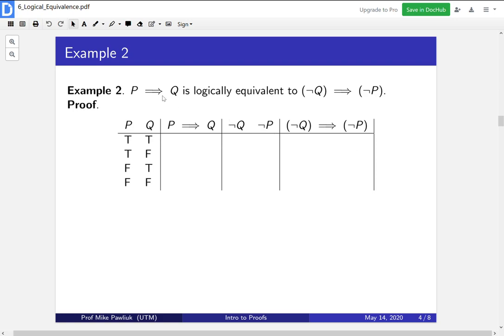So let's start by computing P implies Q. This should be a review from a previous video. True implies true is true. True implies false is false. That's the weird one. And then if the premise is false, then you automatically get true.